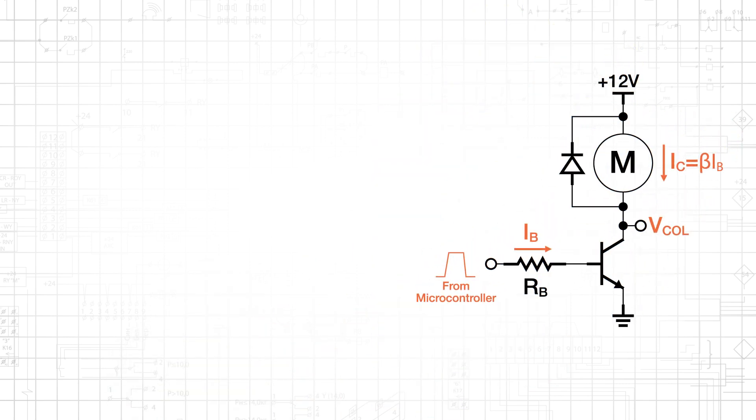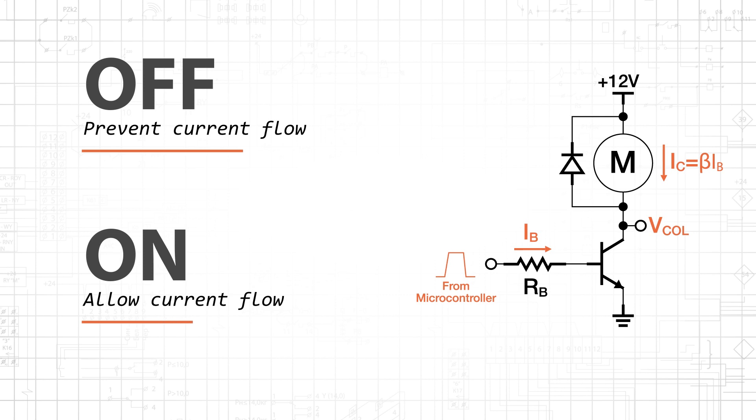When we use a BJT as a basic low-side switch, the goal is to turn the load off by preventing current flow, and to turn the load on by allowing current to flow freely from the supply voltage, through the load, through the BJT's collector and emitter, to ground. Preventing current flow is easy enough. A logic-low control signal will not forward bias the BE junction, and thus the transistor will be in cutoff.